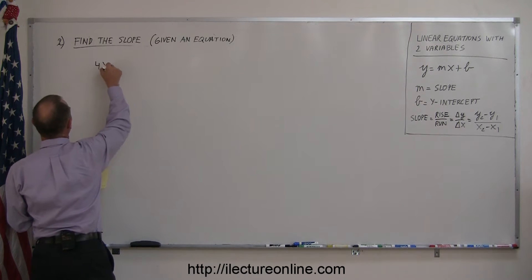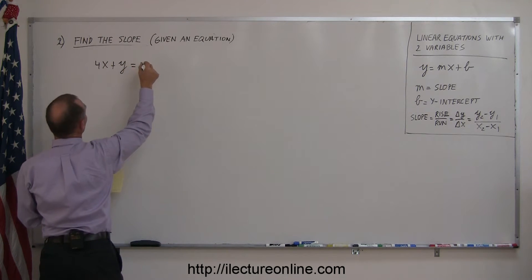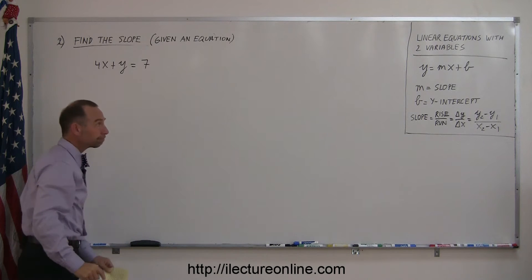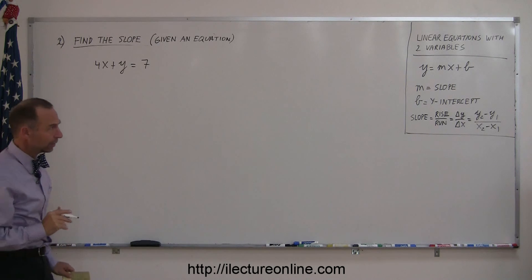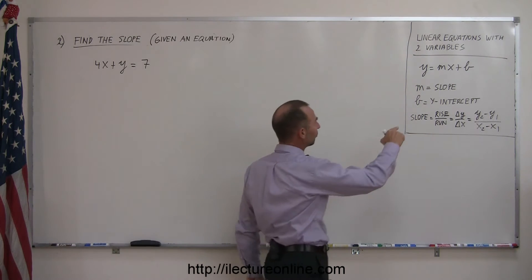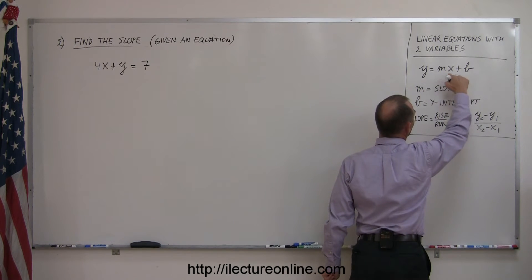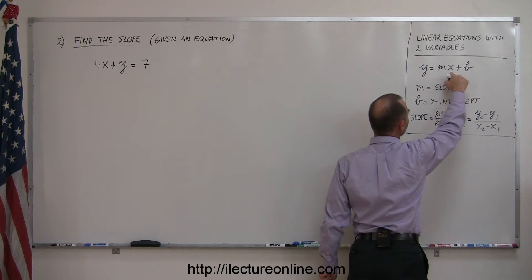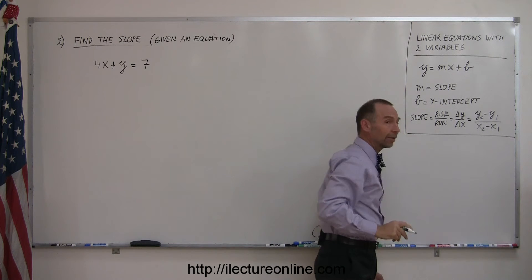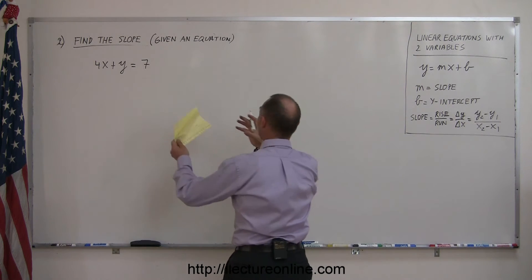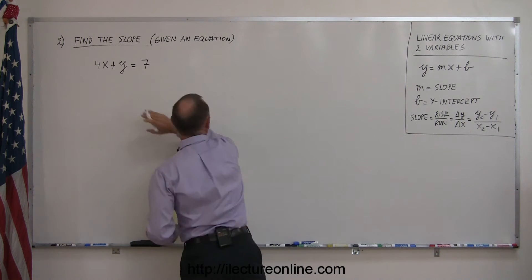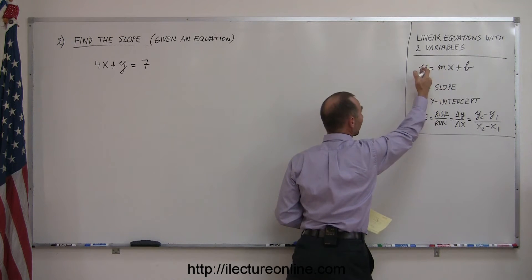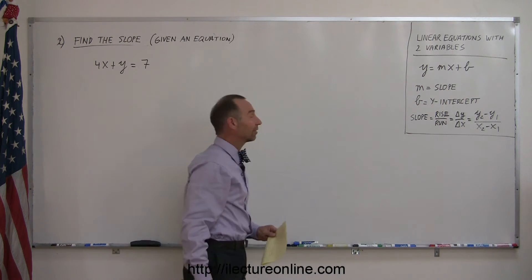We have 4x plus y equals 7. Alright, you're supposed to find the slope. Now realize that this is the general format of a linear equation and the number in front of the x is equal to the slope. But before you can pull that out of there, you want to make sure that you write the equation you were given in this exact format with y on the left side and everything else on the right side.